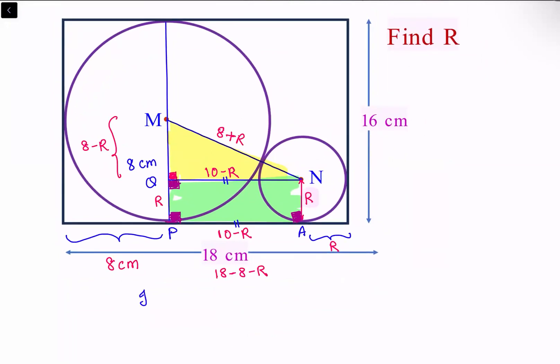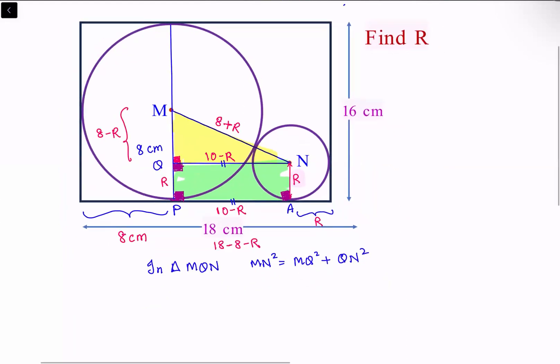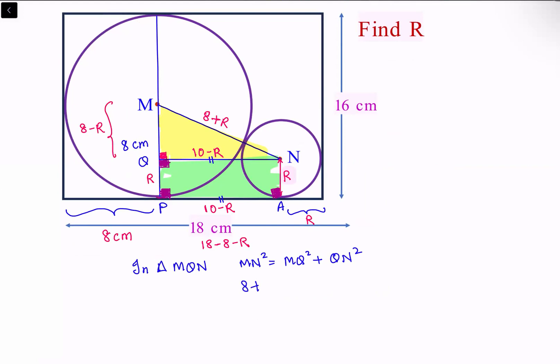In triangle MQN, MN squared equals MQ squared plus QN squared. Let's put in the values: (8 + R)² equals (8 - R)² plus (10 - R)². Opening it up: 64 + R² + 16R equals 64 + R² - 16R plus 100 + R² - 20R. The 64 on both sides cancels, and R² cancels.